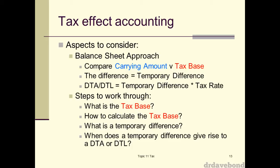To work out the DTAs and DTLs, we use what's called the balance sheet approach. We sit down with the balance sheet and look at all our carrying values — those are your accounting numbers. Then for each item on your balance sheet, you calculate what's called the tax base. You work out the tax base for each asset and each liability, figure out the difference, determine whether it's a DTA or DTL, and then calculate that amount, which is simply the temporary difference multiplied by the corporate tax rate.